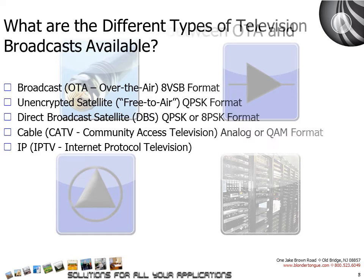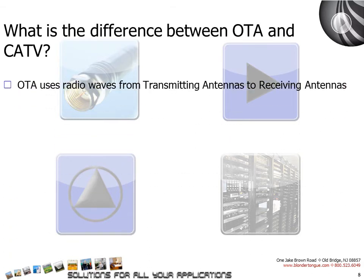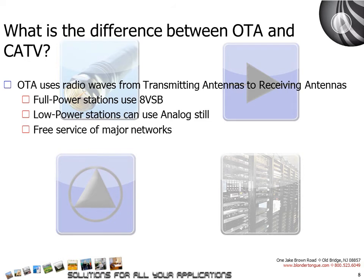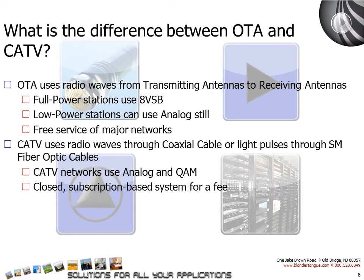What is the difference between over the air and cable television? Over the air, or OTA, is the mode of television broadcast typically using radio waves through transmitting and receiving antennas or television antenna aerials. Full power television stations use an 8VSB format, while low power stations can use analog format still, and it is typically a free service of the major television networks. CATV or cable television is a system of distributing television programs to subscribers via RF signals transmitted through coaxial cables or light pulses through fiber optic cables. Cable television networks use analog and QAM signals and is typically a closed subscription-based system for a fee.